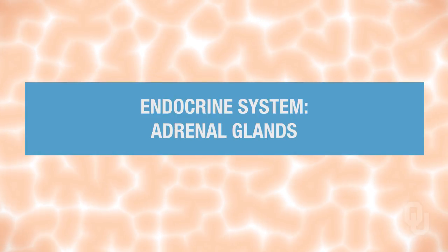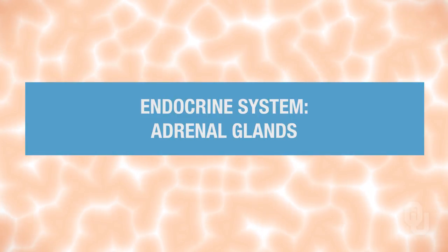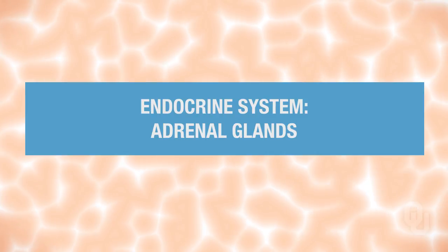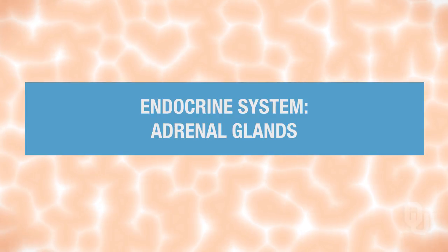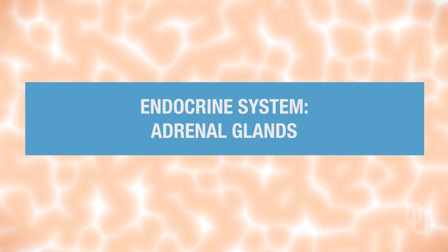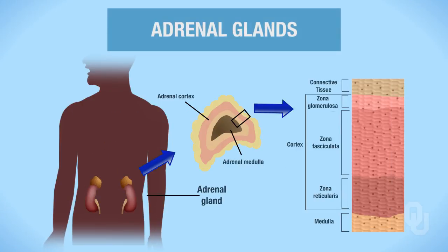In this segment on the endocrine system, we're going to be focusing on the adrenal glands and the hormones that are synthesized and secreted from that gland. First, let's take a look at the adrenal gland and the two regions within it. There's the adrenal cortex and the adrenal medulla. The adrenal cortex is the outermost part, whereas the adrenal medulla is the innermost part.